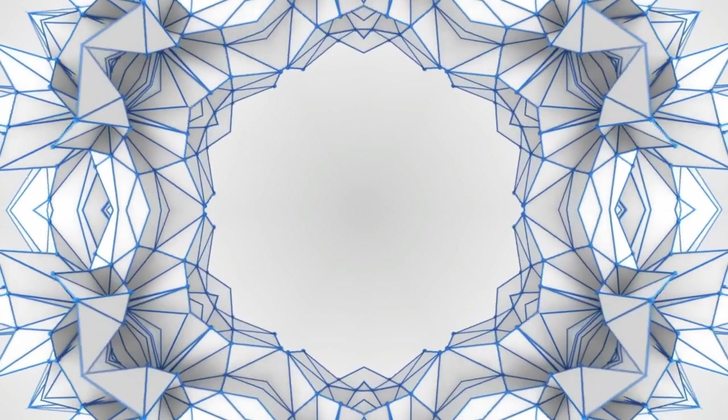You know what a stereogram is. In order to see the hidden picture, you have to relax your eyes and unfocus. That's what diffuse awareness is like.